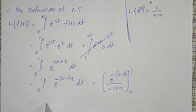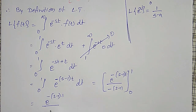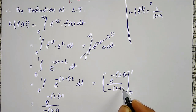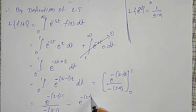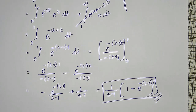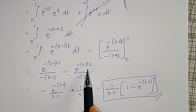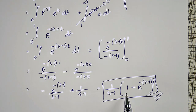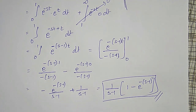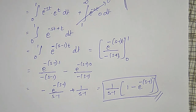Substituting the upper limit (t = 1) and lower limit (t = 0), I get e^(−(s−1)·1) / (−(s−1)) minus e^(−(s−1)·0) / (−(s−1)). After simplifying, the final answer is [1 − e^(−(s−1))] / (s−1). This is the Laplace Transform of the first discontinuous function.